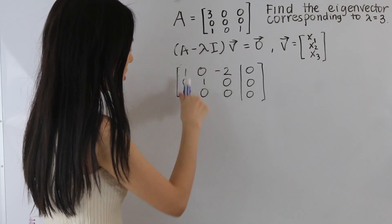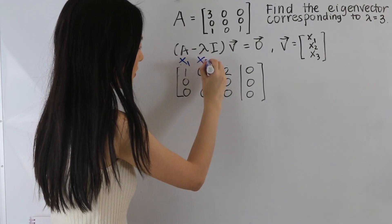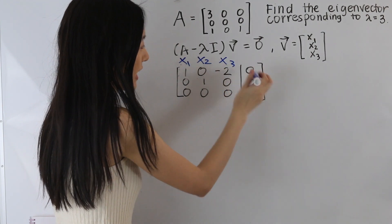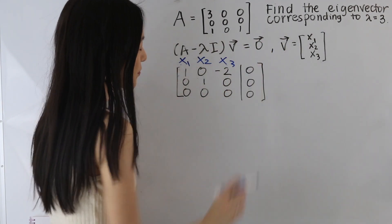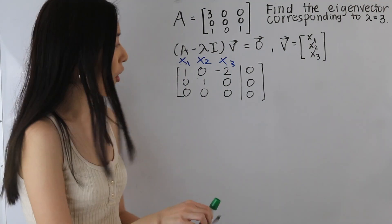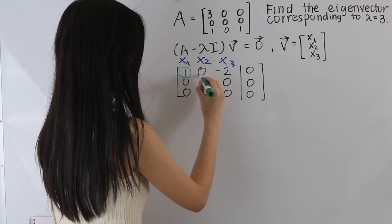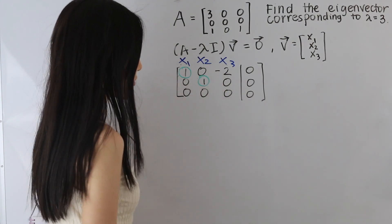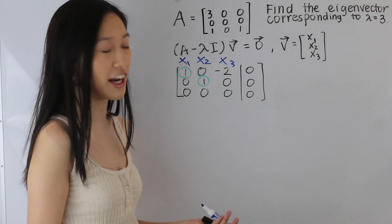So just a note, this column corresponds to x1, this column corresponds to x2, and this column corresponds to x3. And so let's go ahead and circle our pivots. We have this one here and this one here. And the reason for this is because any column that does not correspond to a pivot is considered a free variable.